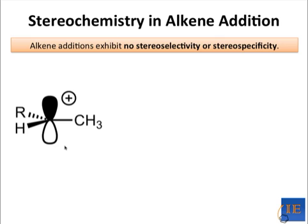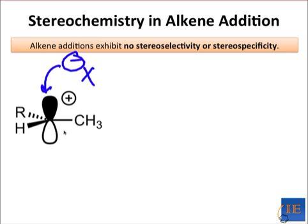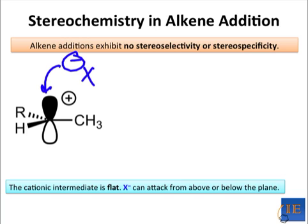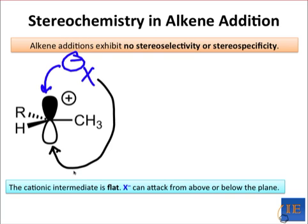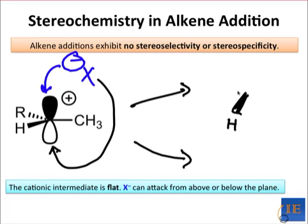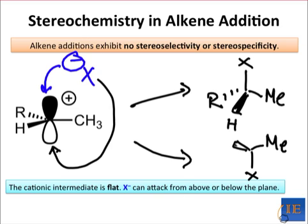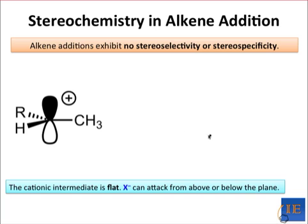Lastly, let's consider stereochemistry in the products of addition reactions. After a proton is transferred to the alkene, it's often poised to become chiral after attack by X-minus. However, in most cases, even if the product of an addition reaction is chiral, equal amounts of both enantiomers will form. Keep in mind that the cation has sp2 hybridization and is completely flat. Thus, the nucleophile can attack above or below the plane of the cation, and it will do both with equal probability. The result is equal amounts of two enantiomers. To save time, we can indicate the equal mixture of enantiomers by drawing a single wavy bond from the stereocenter instead of wedges and dashes.